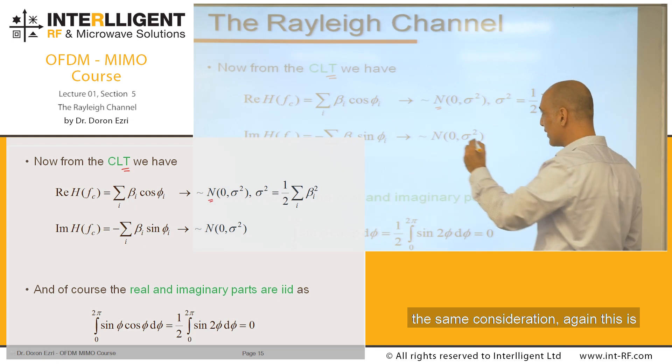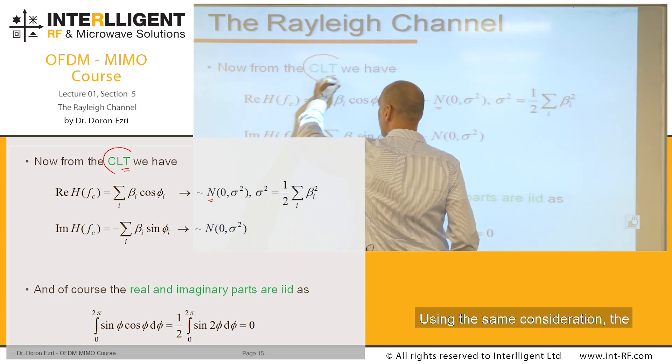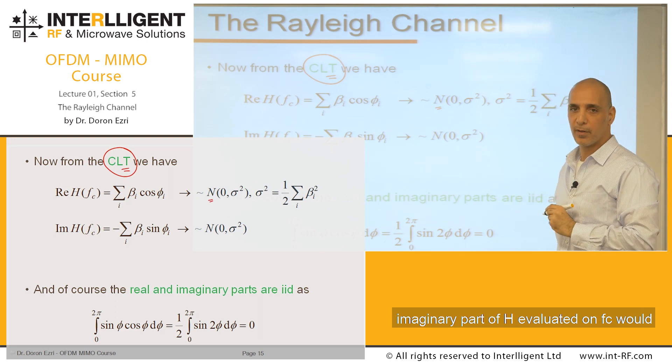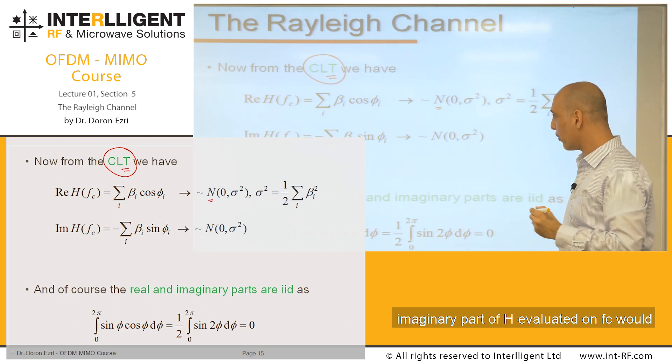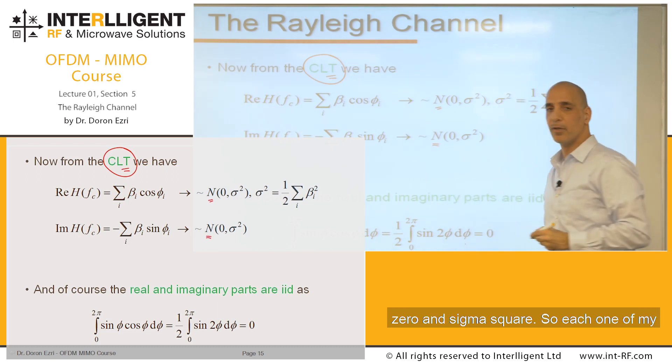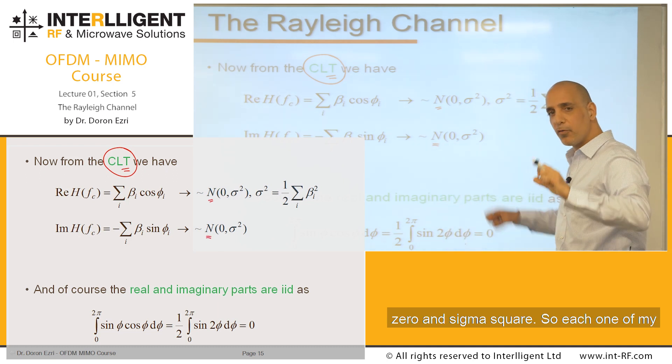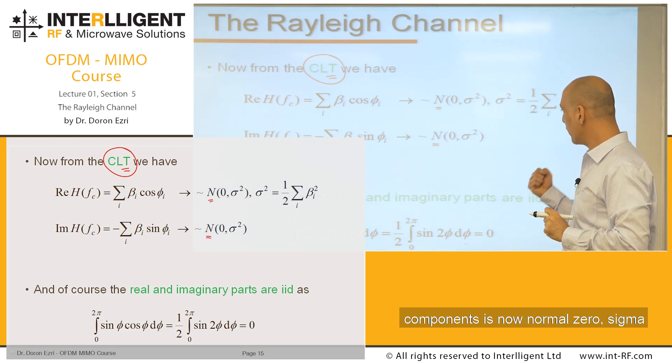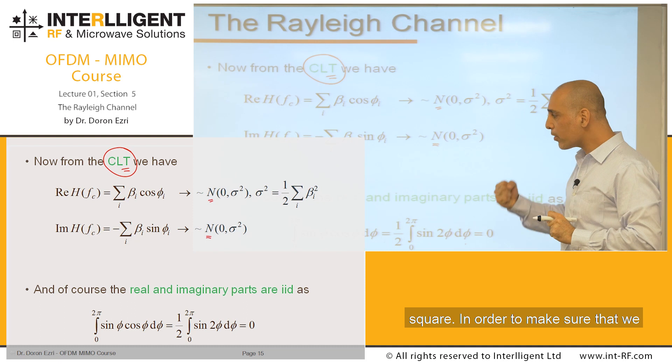The same way, using the same consideration, this is the key to everything, the imaginary part of H valued on fc would also tend to be normal with zero mean and sigma^2. So each one of my components is now normal (0, sigma^2).